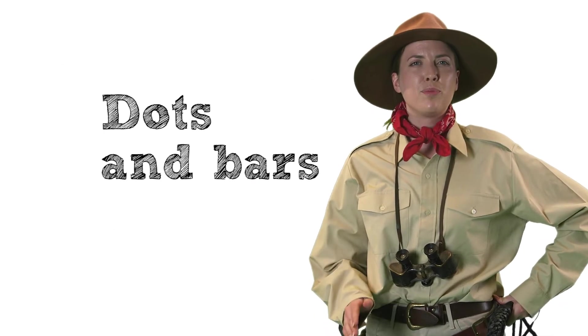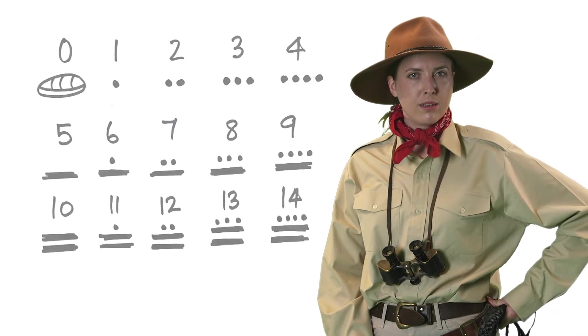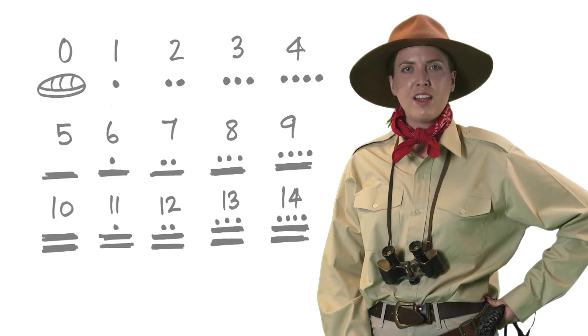Their system used dots and bars instead of numbers. One dot equals one, two dots is two, and three and four.